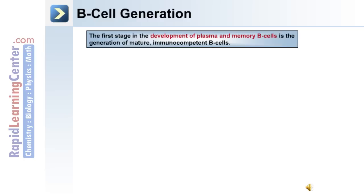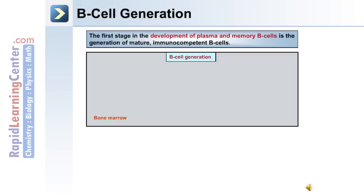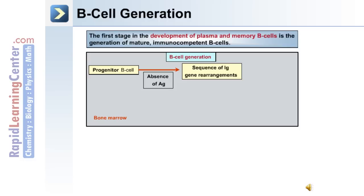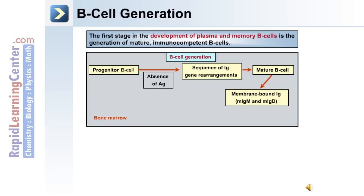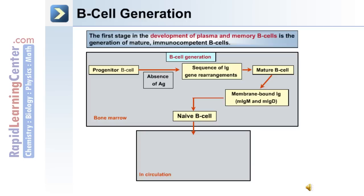The first stage in the development of plasma and memory B cells is the generation of mature immunocompetent B cells, which takes place in the bone marrow. Progenitor B cells in the absence of antigen undergo a sequence of immunoglobulin or Ig gene rearrangements, leading to a mature B cell. Membrane-bound Ig, either IgM or IgD, goes with the naive B cell as it exits the bone marrow and enters the circulation. The naive B cell then becomes an active B cell upon encounter with antigen.